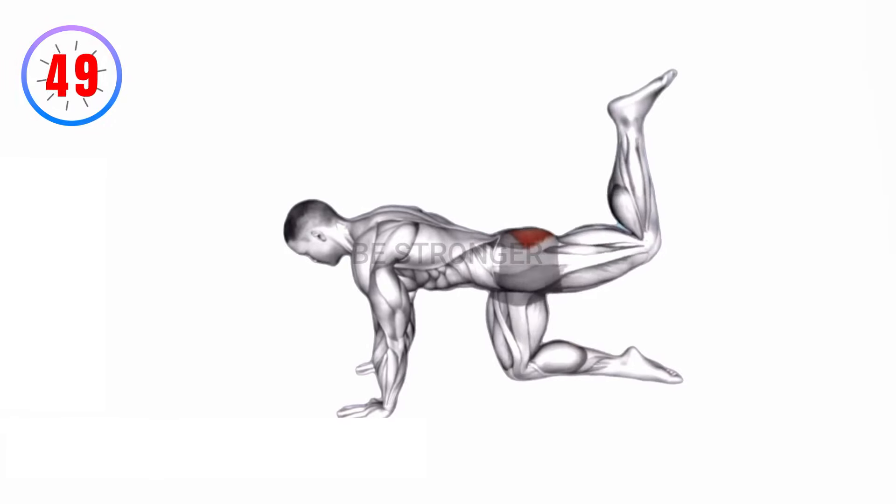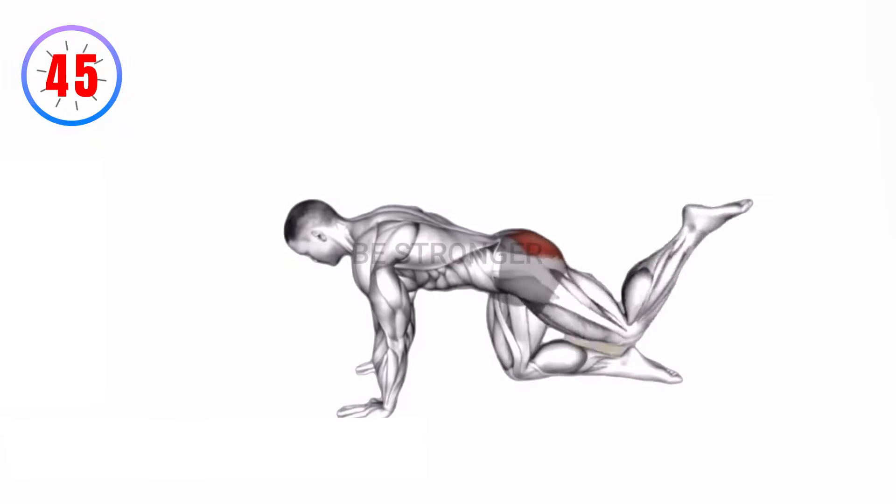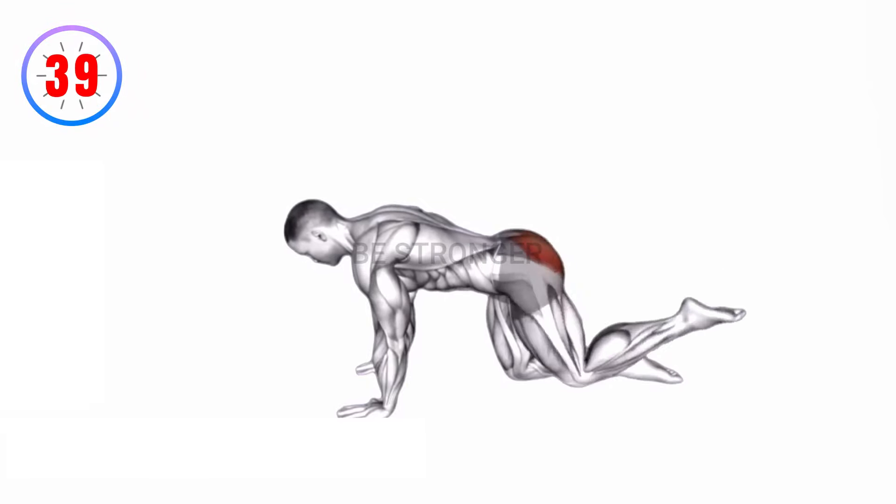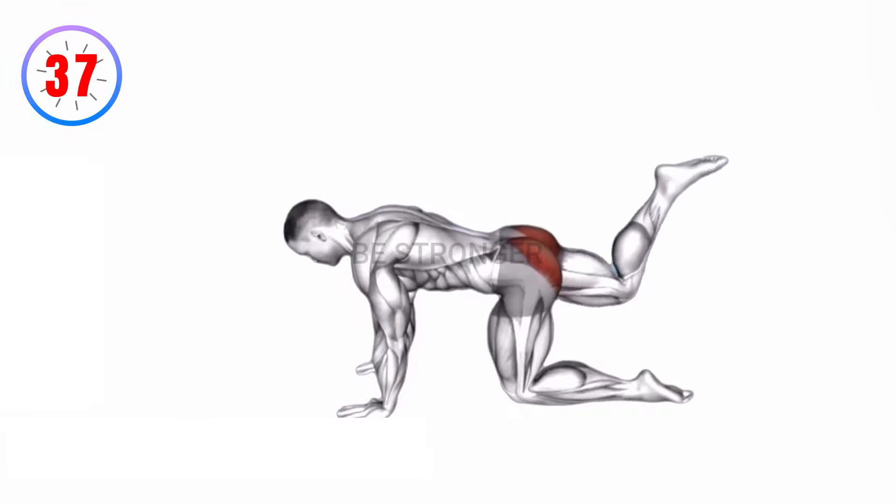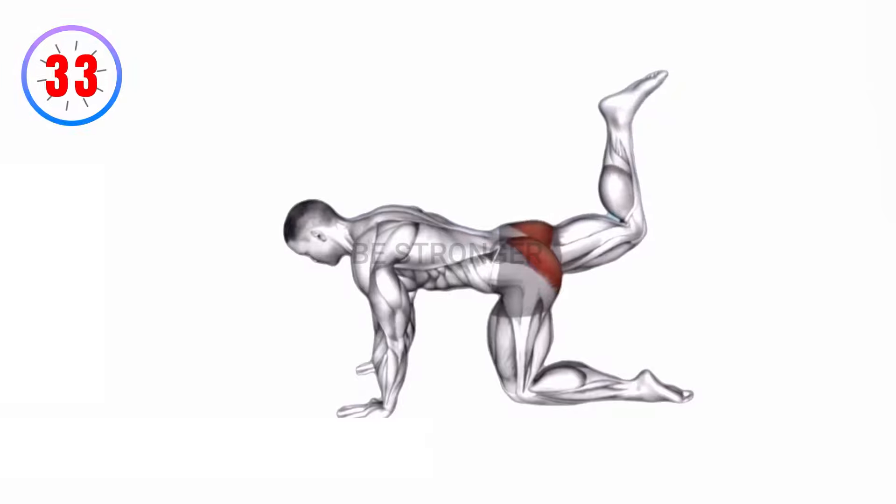To perform the bent leg kick back, start on all fours with your wrists aligned under your shoulders and knees under your hips. Lift one leg, keeping it bent at a 90 degree angle, and kick it back, engaging your lower belly and glutes. Return to the starting position and repeat on the other leg.